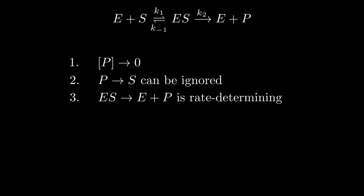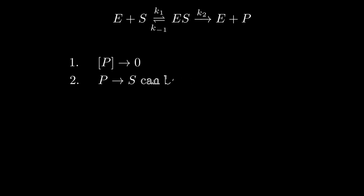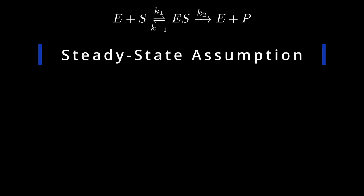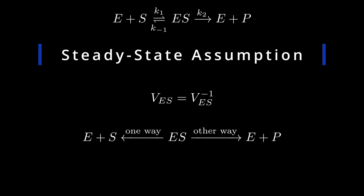Also, as the reaction scheme implies, the enzyme can only take in one substrate as opposed to multiple. Secondly, we assume steady state. The steady-state assumption assumes that the rates of formation and breakdown of the enzyme-substrate complex are the same. This equality is essential for our journey. Notice that for the breakdown of ES, it goes two ways: one is the simple dissociation of ES to E and S, the other being the rate-determining reaction ES to E and P.